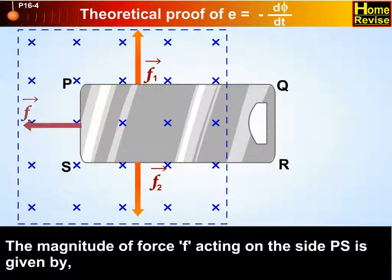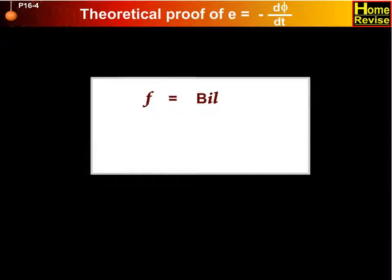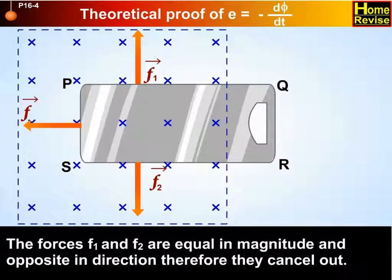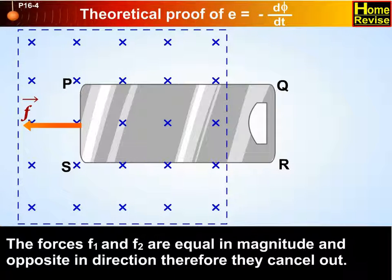The magnitude of force F acting on the side PS is given by F equals BIL, since vector F equals vector IL cross vector B. The forces F1 and F2 are equal in magnitude and opposite in direction. Therefore, they cancel out.